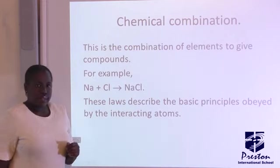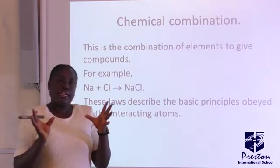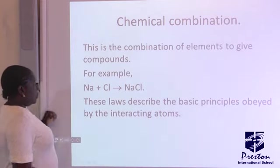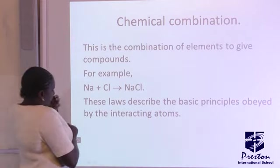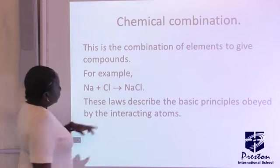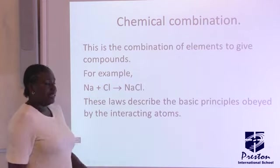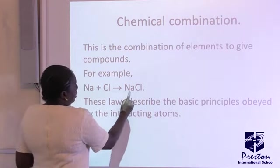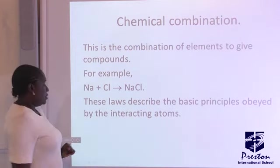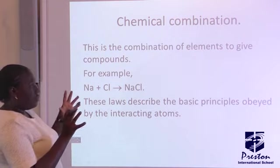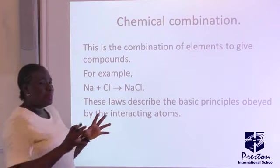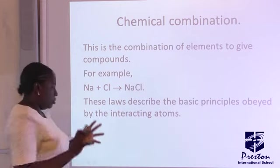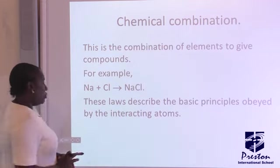Now, what do we mean by chemical combination? That is forming together of elements to form a compound. For example, sodium reacting with chlorine to form sodium chloride. The sodium and the chlorine are the reactants, while sodium chloride is the product. This law of chemical combination describes the basic principles obeyed by each of these atoms during the combination.